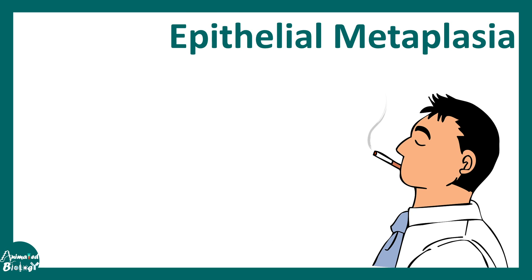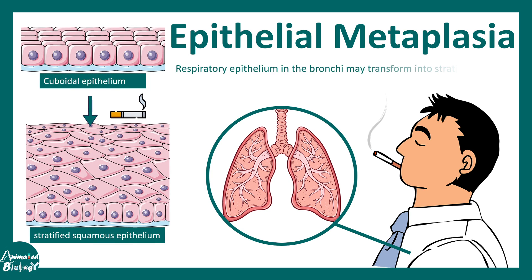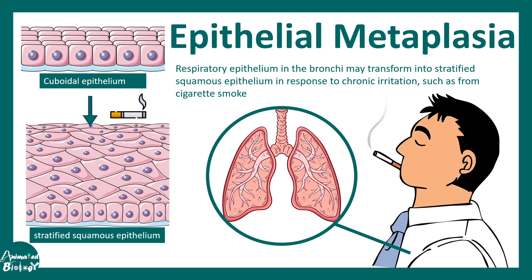For example, consider a man who smokes daily — a chain smoker. In his respiratory tract, especially in the bronchi, the respiratory epithelium can get converted into stratified squamous epithelium in response to chronic irritation from cigarette smoke. This is an example of pathologic metaplasia.